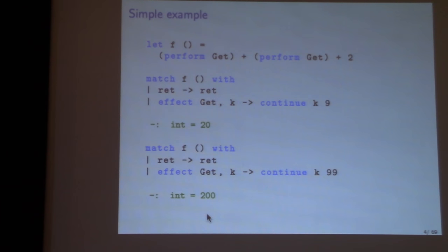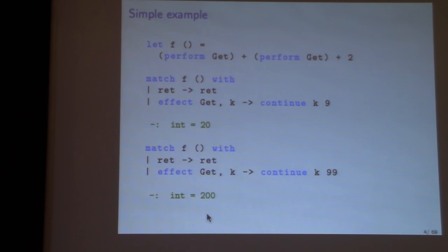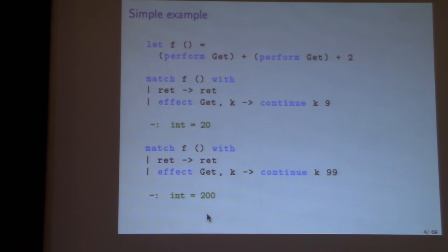You can run this inside a context where get is being handled. When perform get is reached, it jumps to the handler, which has both the get operation and a continuation k. It continues back where it left off with nine as the result, does that again, and the result is 20. Under a different handler continuing with 99, the result is 200. That continuation continues the rest of the expression inside the match, including the handler around it — so the second get is handled by the same handler as the first. These are called deep handlers, as opposed to shallow ones.